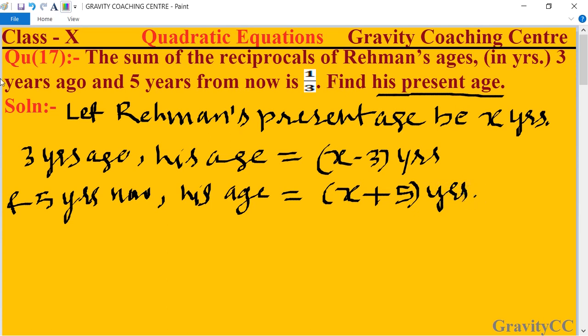According to the question, 1 upon x minus 3, and the reciprocal of x plus 5 is 1 upon x plus 5, equal to their sum is given 1 by 3.